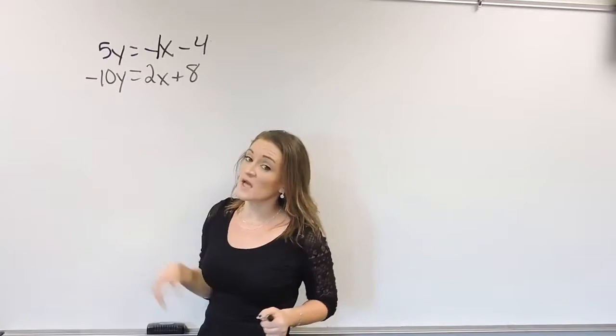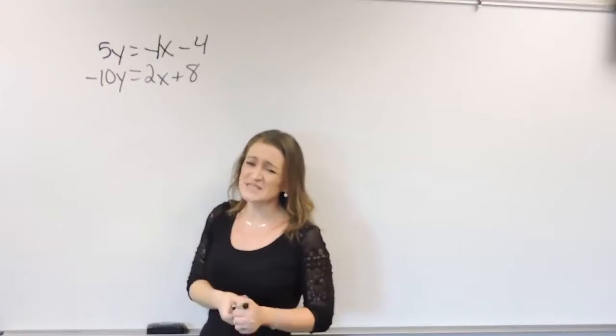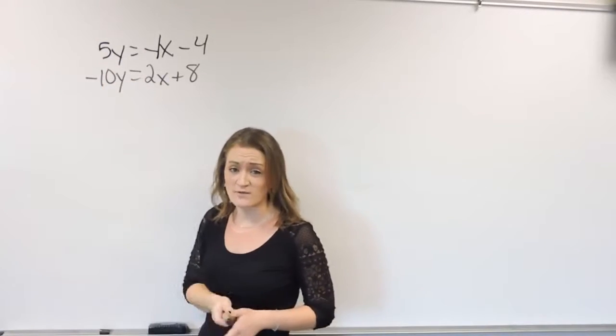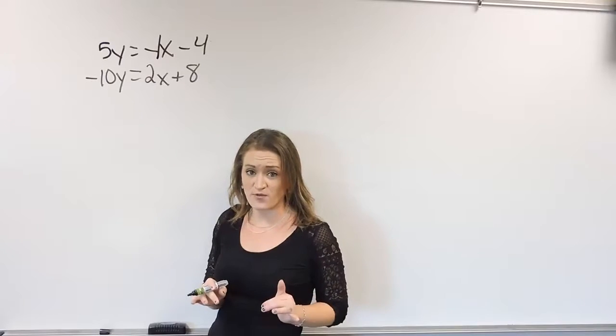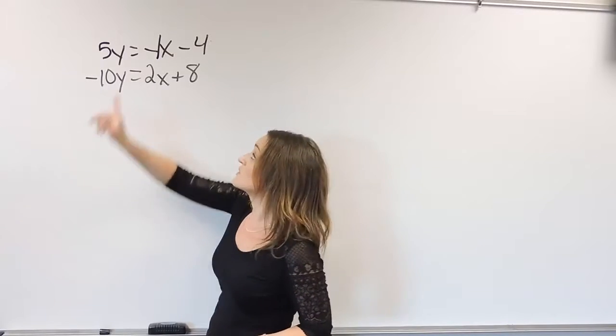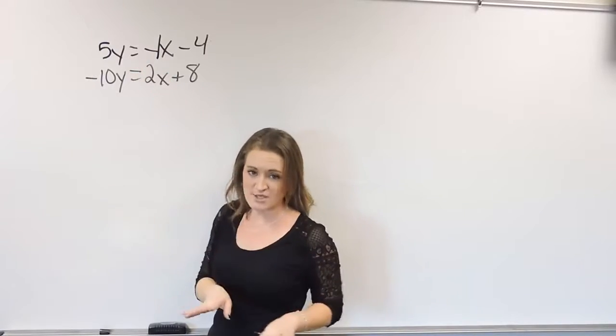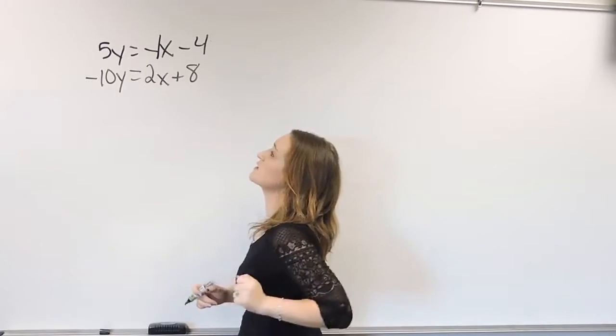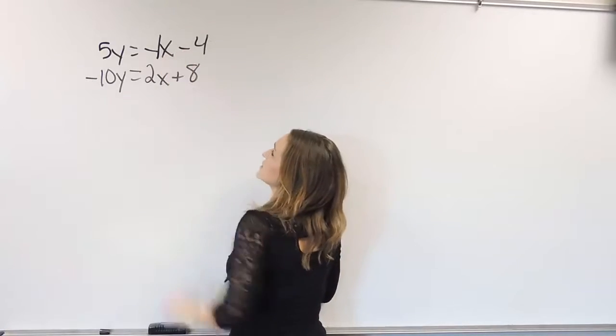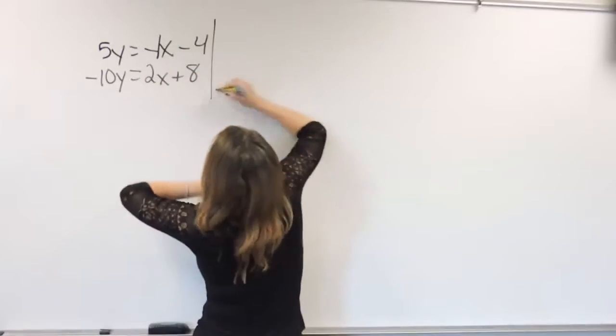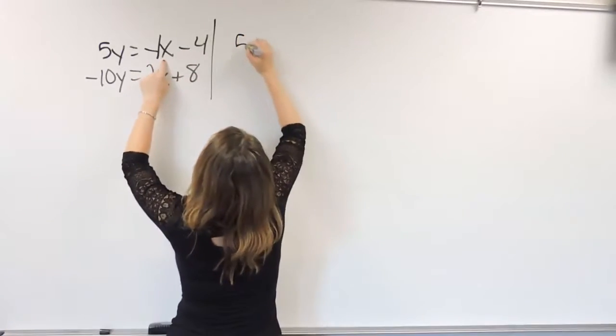Not that you can't use one of the other ones over here. It just means it's going to be uglier to solve. We're more than likely going to have to deal with fractions and things of that nature, which is why we always try and find the one that has a 1 for a coefficient. It makes our life easier. So for this particular example, I'm going to be taking my top equation, and specifically, I'm going to be solving it for x.